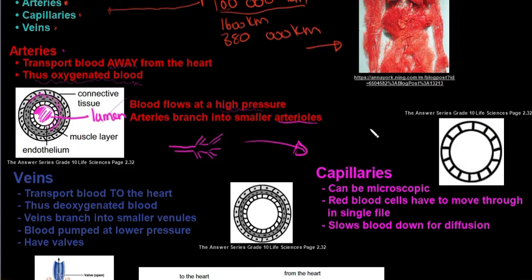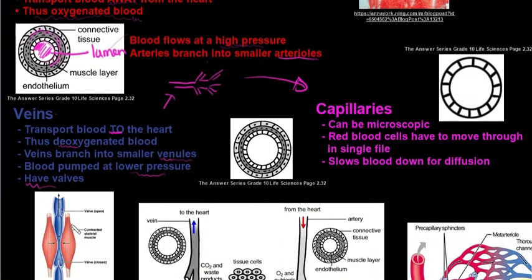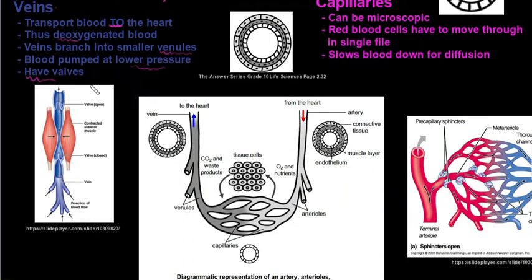Veins transport blood to the heart, bringing blood from all the organs and extremities back to the heart. They carry deoxygenated blood, as oxygen has already been given off to all of the organs and tissues. When veins branch off into smaller pieces, we call those smaller branches venules. Blood is pumped at a lower pressure in veins than in arteries.